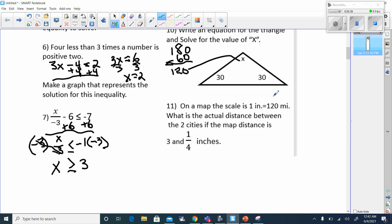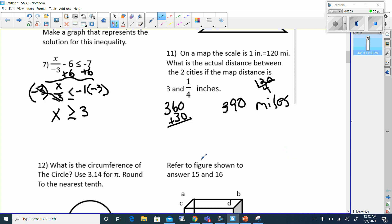On a map, the scale is 1 inch equals 120 miles. What is the actual distance between two cities if the map distance is 3 and 1 fourth inches? 3 inches, that's going to be 3 times 120, which is 360. And then 1 fourth of 120 is 120 divided by 4. I know 12 divided by 4 is 3, so that's got to be 30. So that's going to be plus 30. So this is going to be 390 miles.